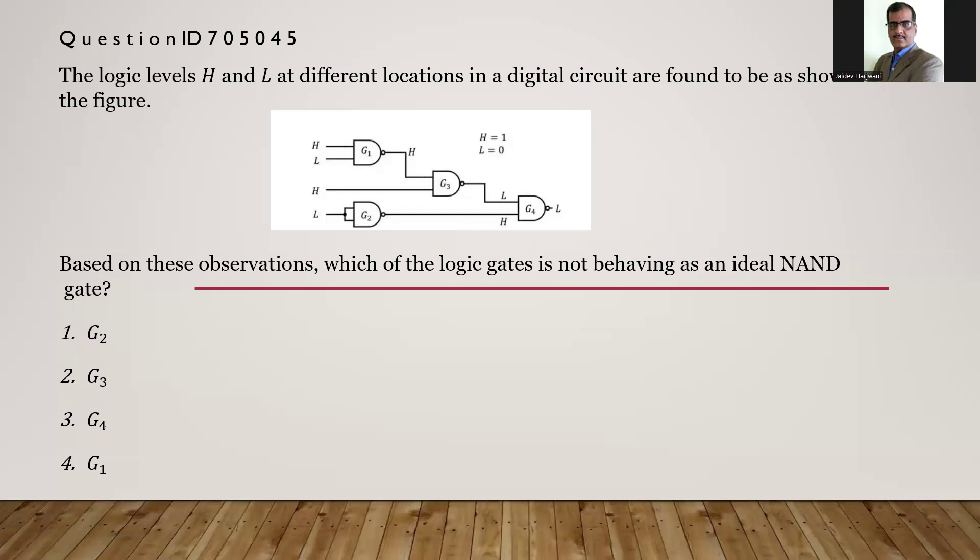If you go low-low or high-low, the output will be high. When both are high, then only the output of the NAND gate will be low. If you see this G1, high-low will give you high. That will be always high. Low-low will be also high.